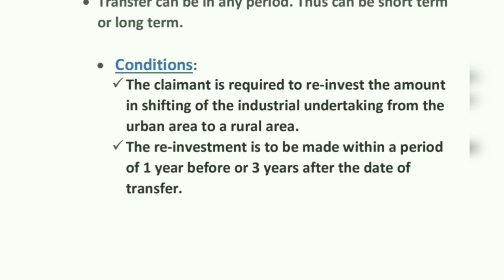The assessee is required to reinvest the amount in shifting of the industrial undertaking from the urban to rural area. The reinvestment is to be made within a period of one year before or three years after the date of transfer. So the asset should be purchased or reinvested either one year before or three years after the date of transfer.